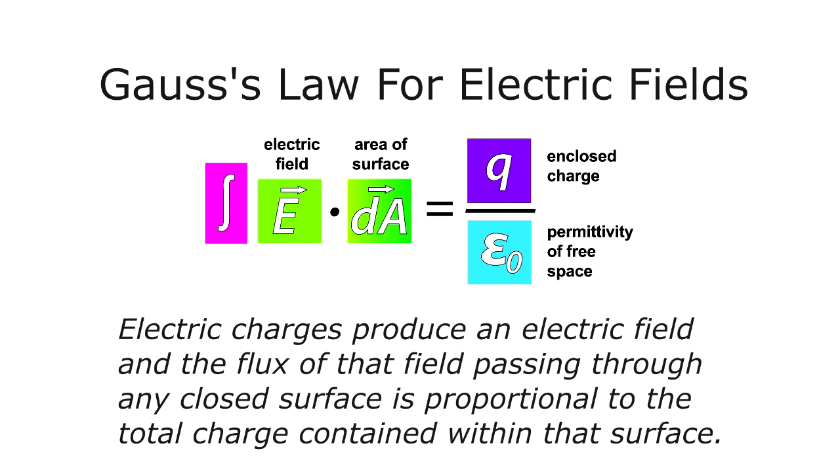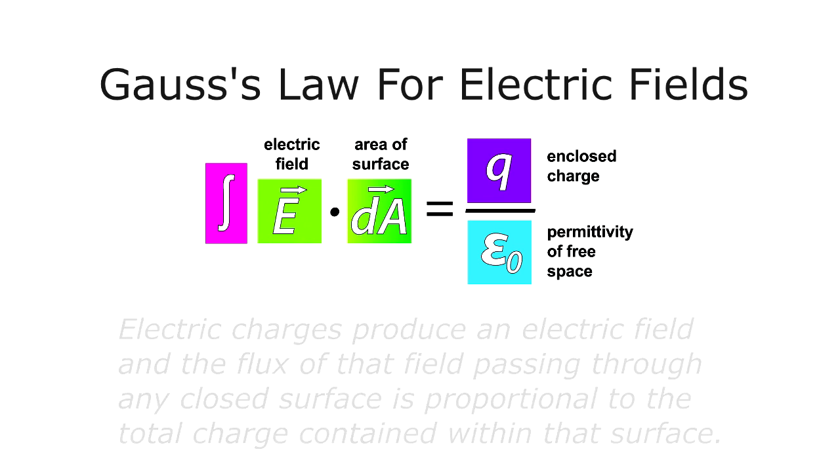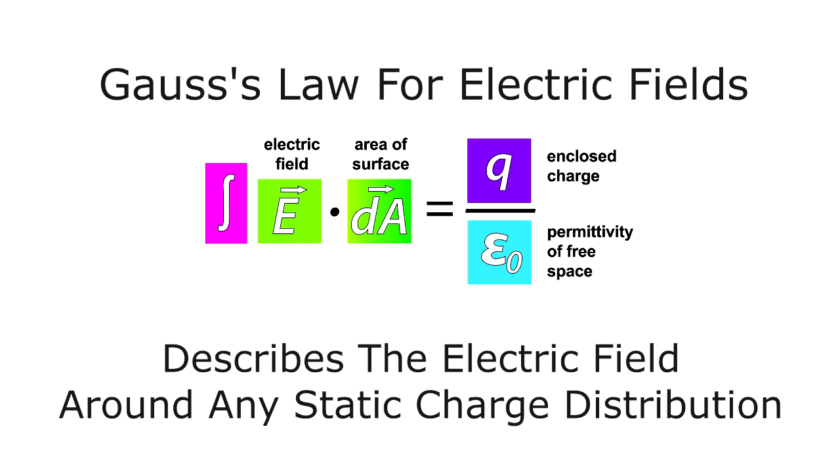Formally, Gauss's law states this: Electric charges produce an electric field, and the flux of that field passing through any closed surface is proportional to the total charge contained within that surface.